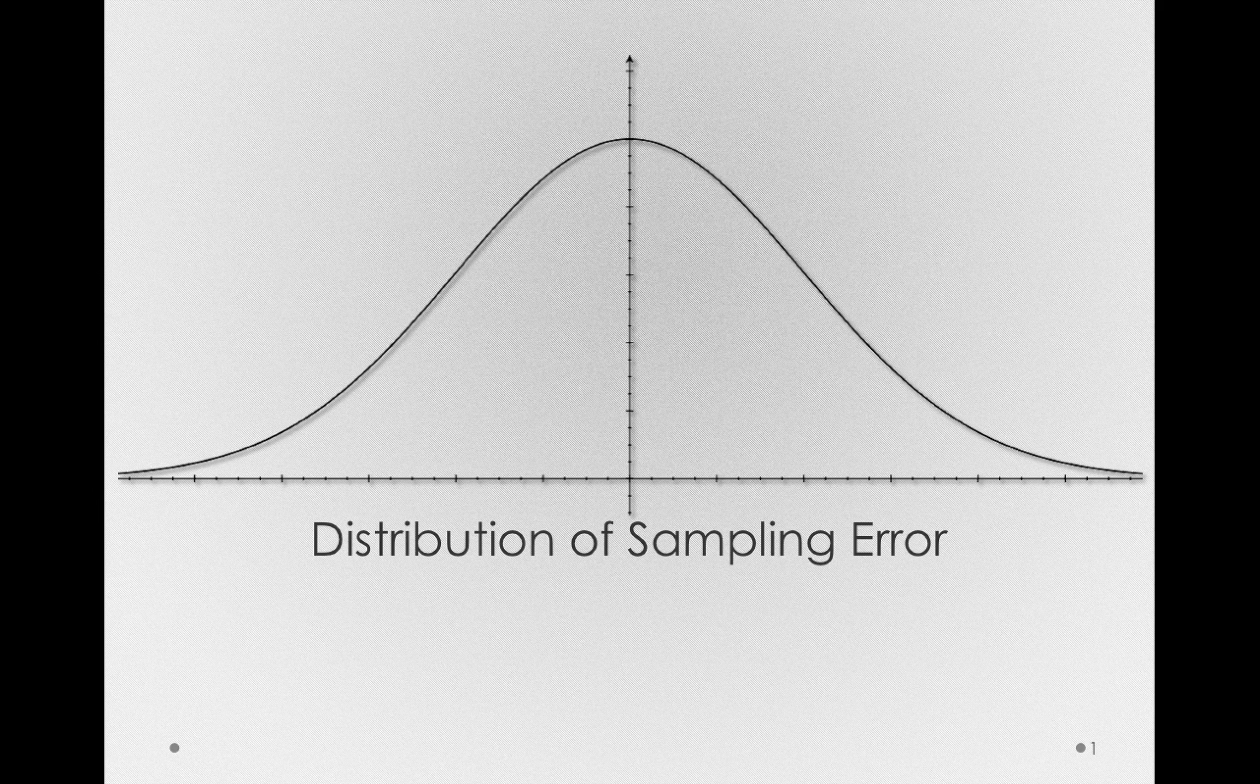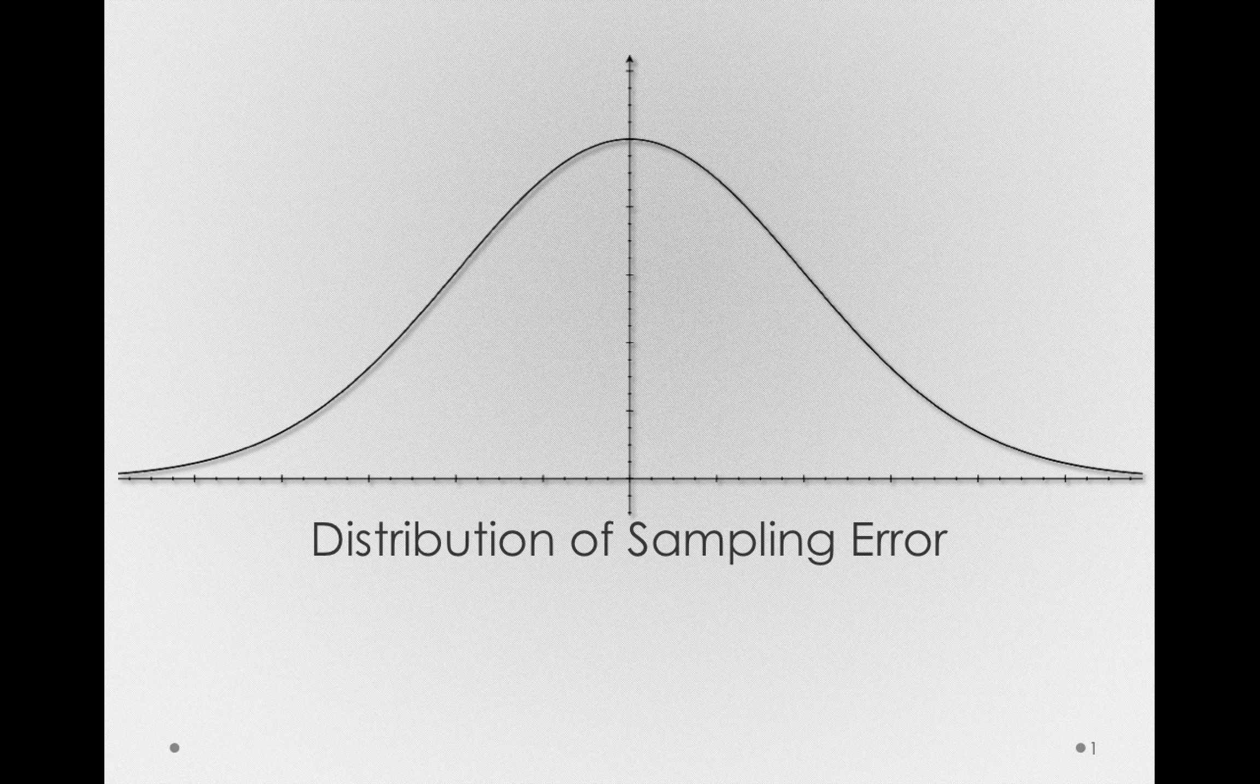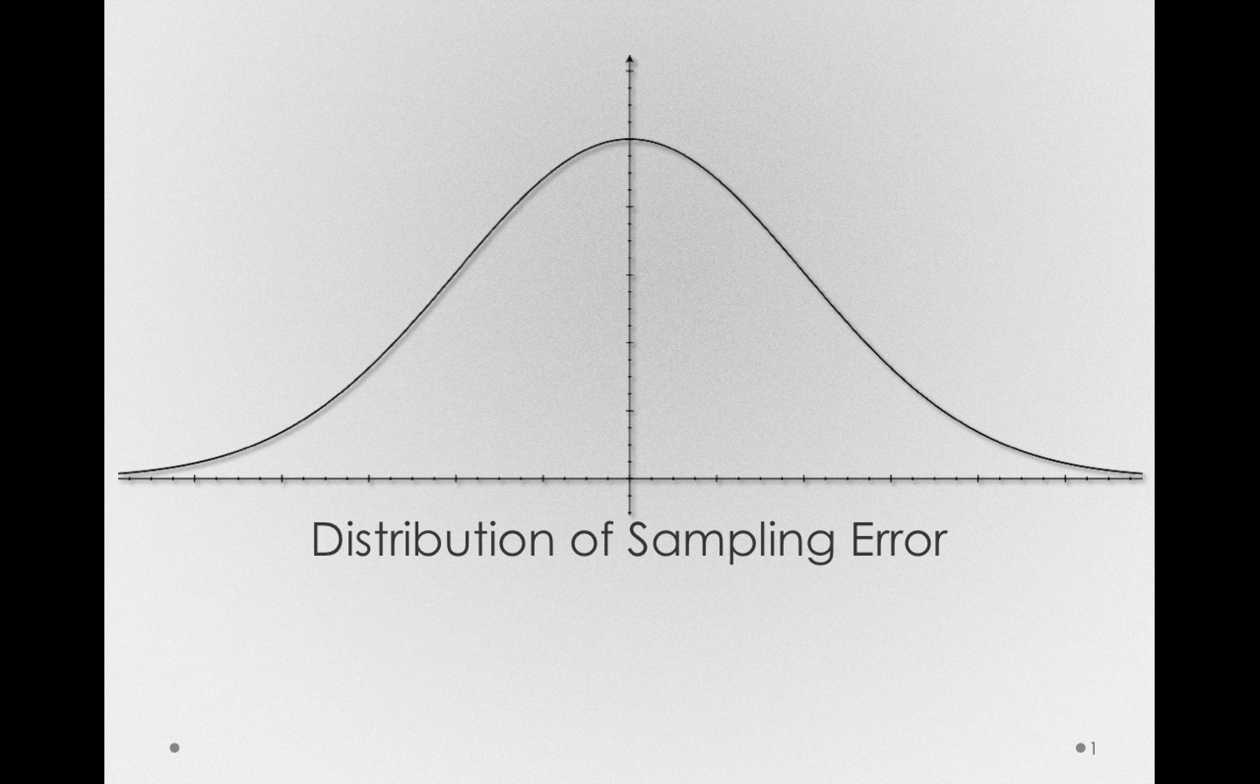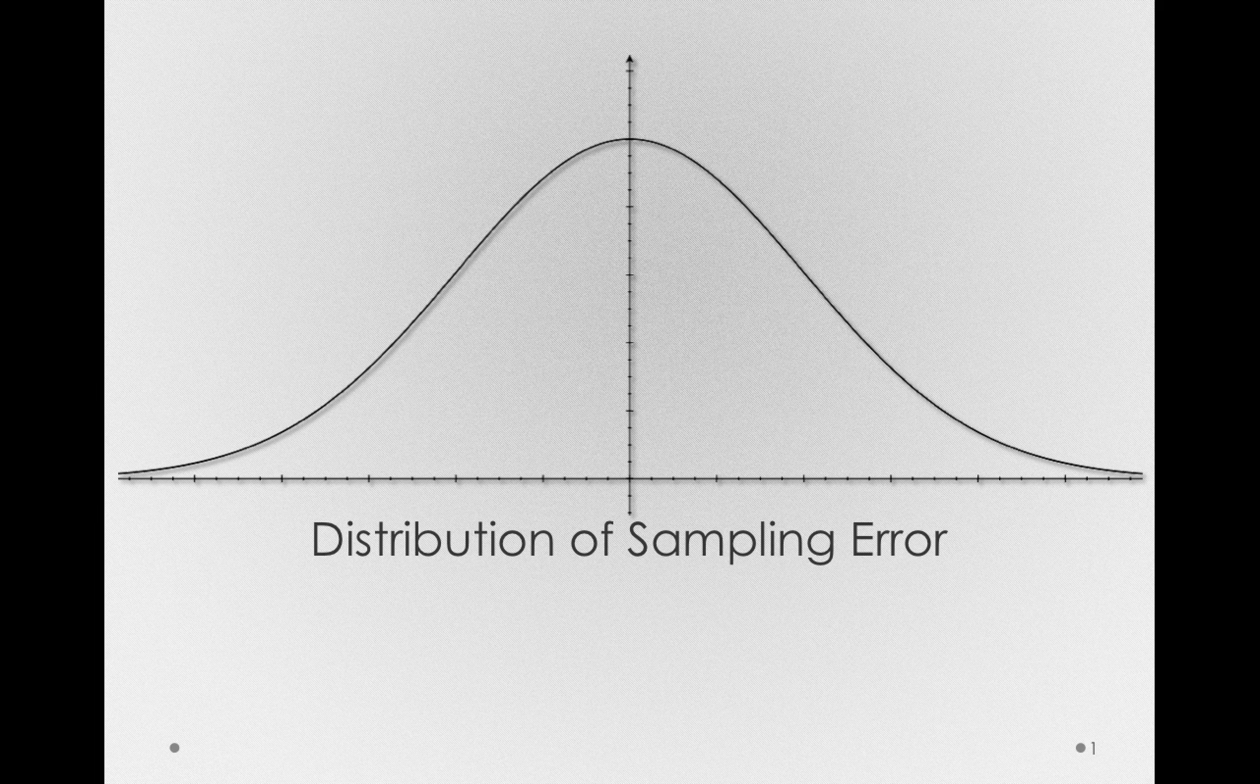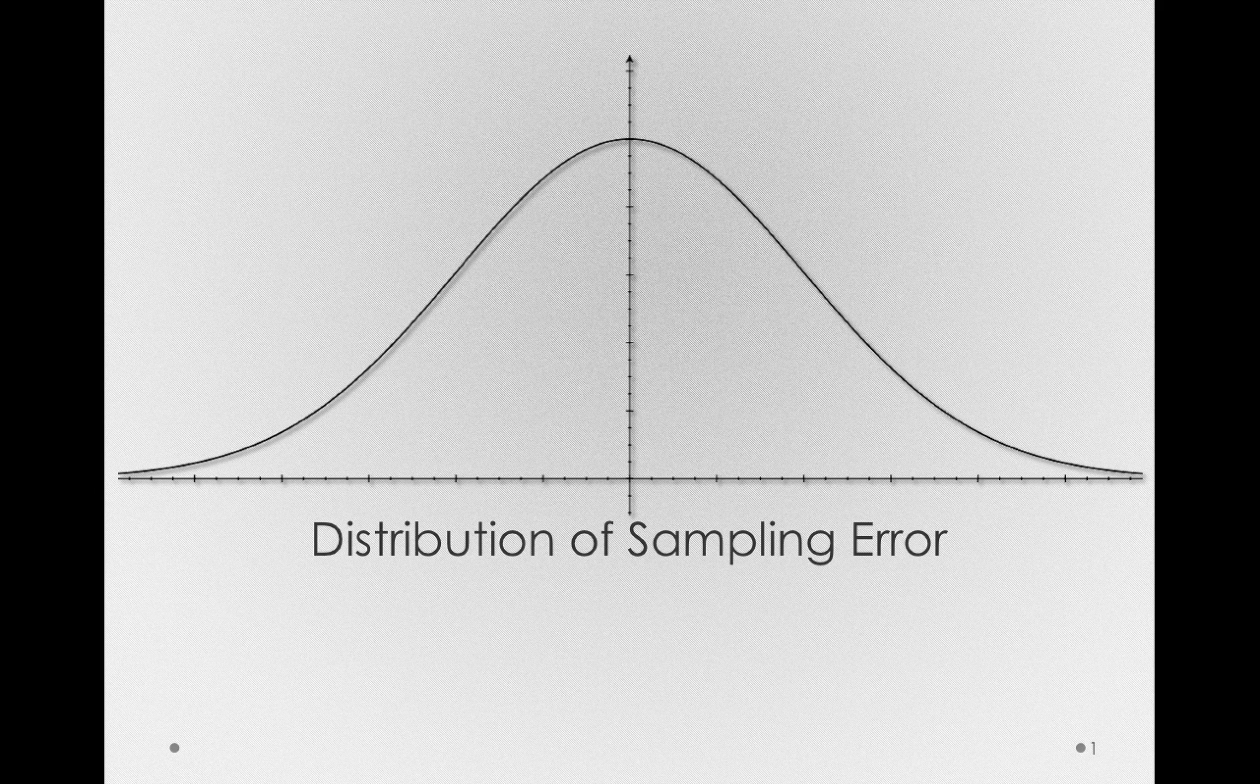The one that asserts that whatever we measured was just sampling error. So notice, the normality of a sampling distribution of means, the normality of sampling error, would allow us to make these very specific points about the probability of events.